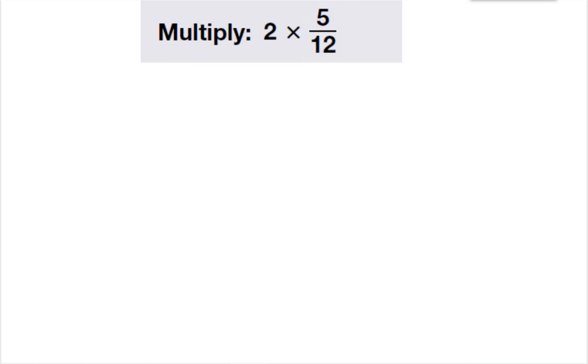Here I'm going to multiply these two numbers and then reduce them. I have two times five-twelfths. To make the number two a fraction, I put it over the number one. Two times five is ten, one times twelve is twelve.